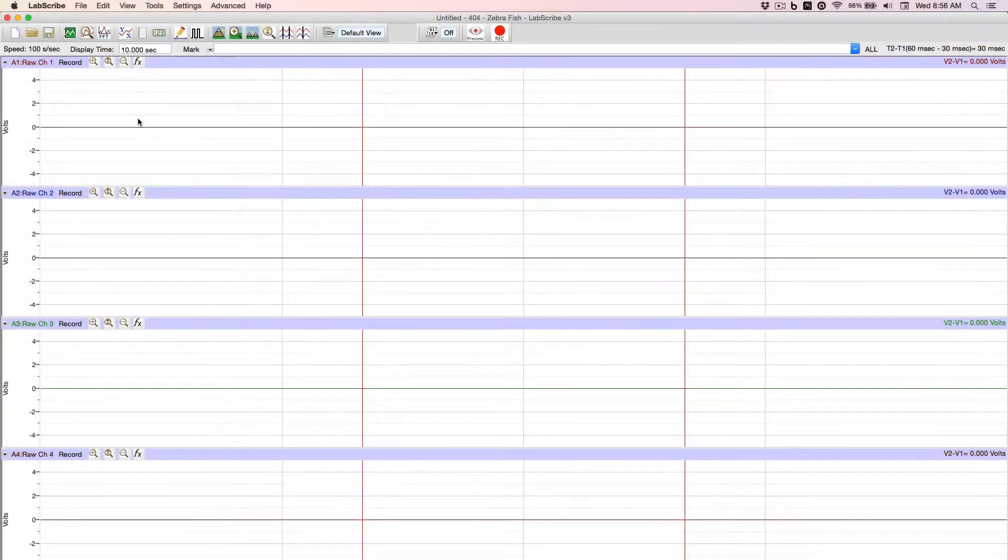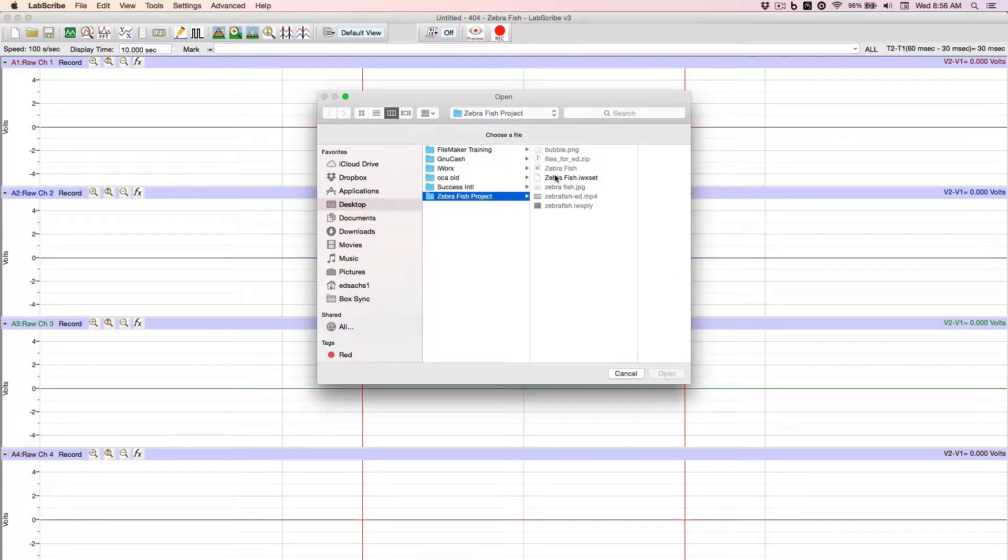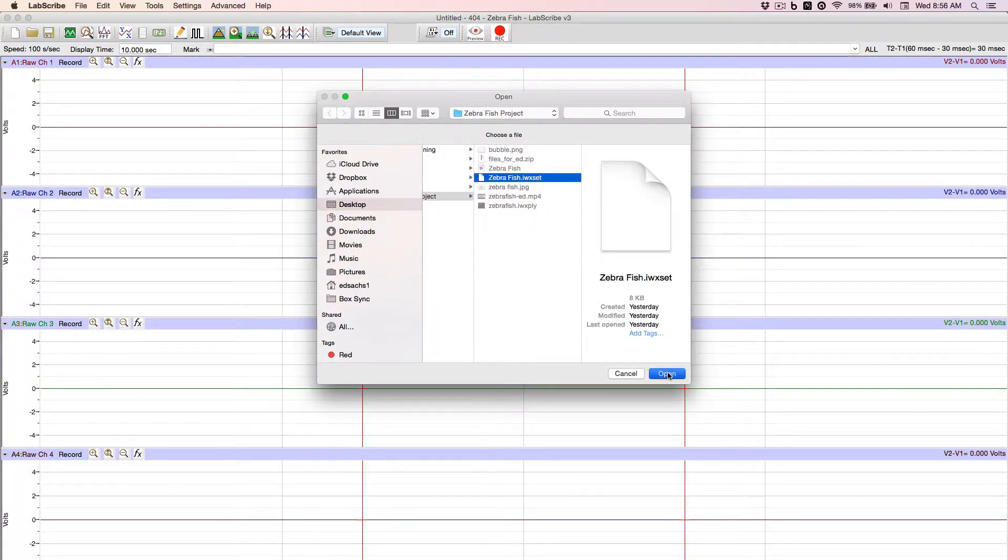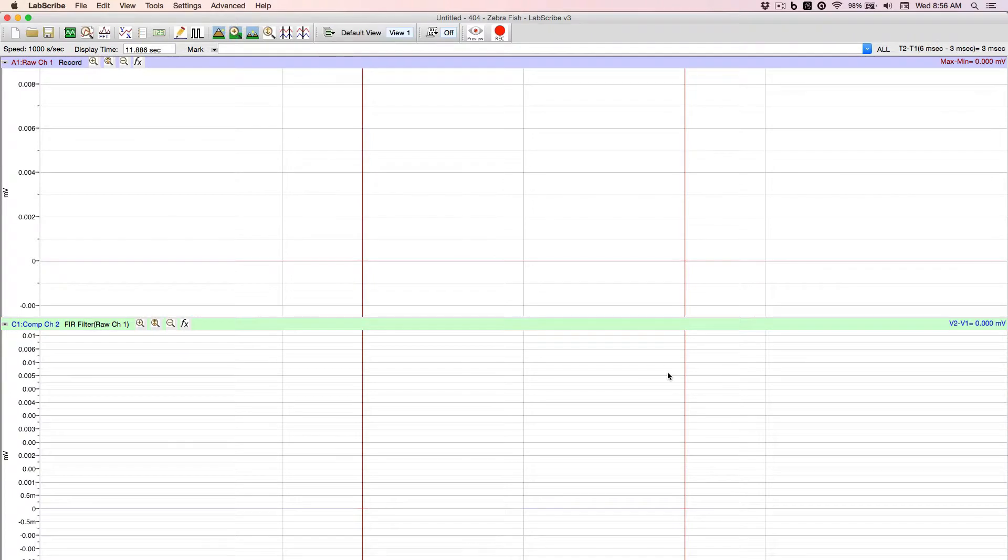Opening up LabScribe, we open up the settings file, which is preset for two channels, a raw channel and a filter channel.